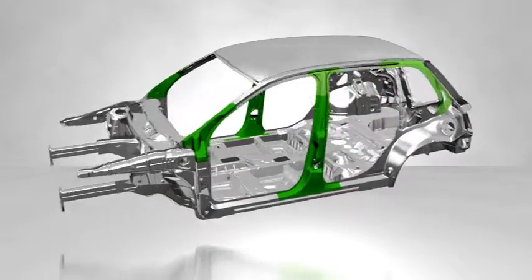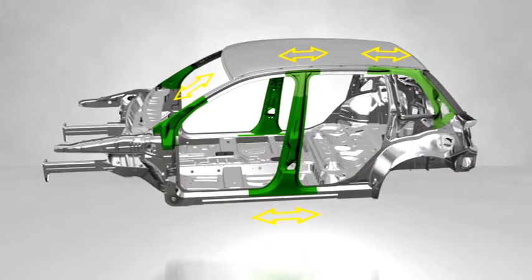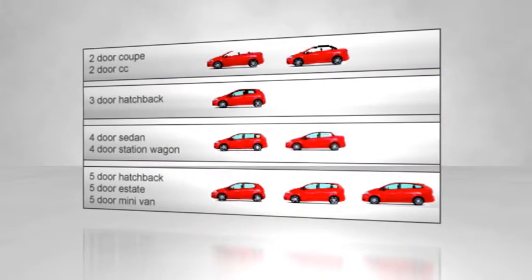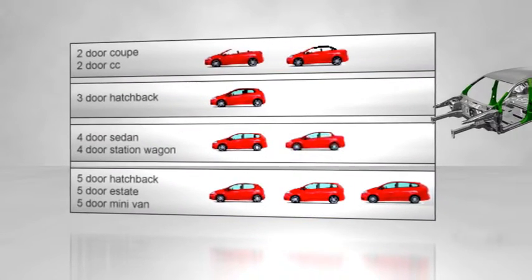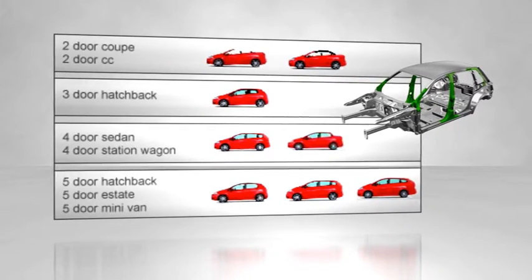Special adapter plates on the A, B, and C pillars permit cost-effective modification of the body in white shape, allowing up to eight different car models to be manufactured at two different locations. This body in white concept saves a great deal of development and production costs.